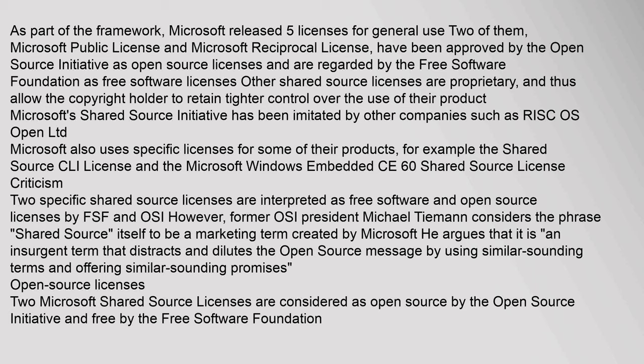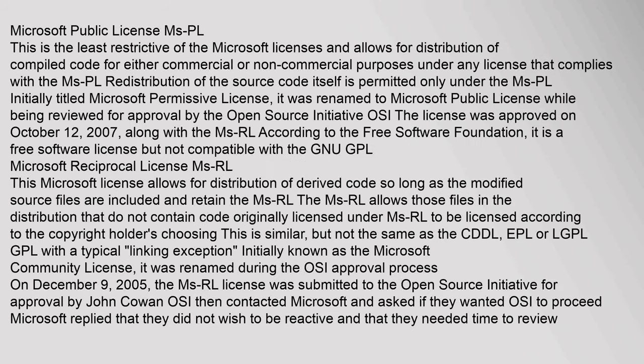Open Source Licenses: Two Microsoft Shared Source Licenses are considered open source by the Open Source Initiative and free by the Free Software Foundation. Microsoft Public License (MsPL): This is the least restrictive of the Microsoft licenses and allows for distribution of compiled code for either commercial or non-commercial purposes under any license that complies with the MsPL. Redistribution of the source code itself is permitted only under the MsPL. Initially titled Microsoft Permissive License, it was renamed to Microsoft Public License while being reviewed for approval by the OSI. The license was approved on October 12, 2007, along with the MsRL. According to the Free Software Foundation, it is a free software license but not compatible with the new GPL.